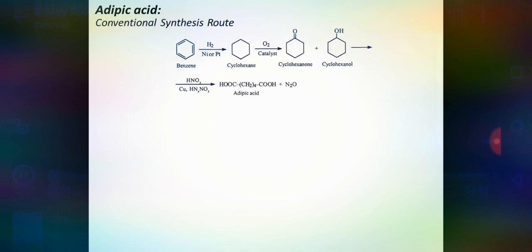Conventionally, adipic acid is synthesized from either cyclohexanone or cyclohexanol on oxidation using nitric acid in presence of copper and quaternary ammonium compounds like NH4NO3. The cyclohexanone or cyclohexanol or mixture of both compounds are formed from cyclohexane on oxidation in presence of catalyst.